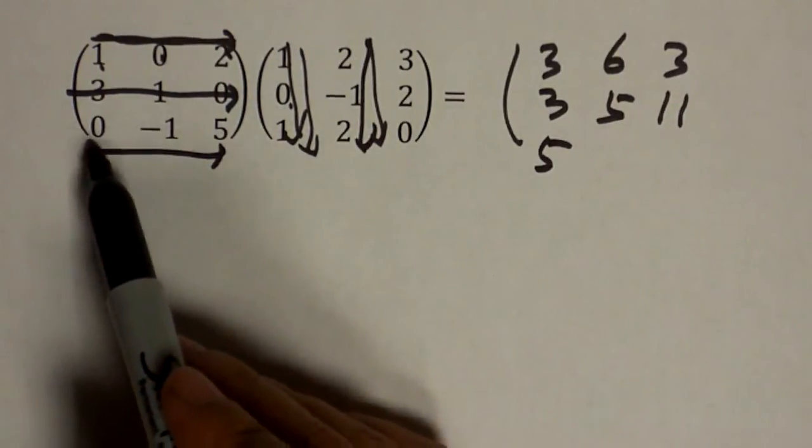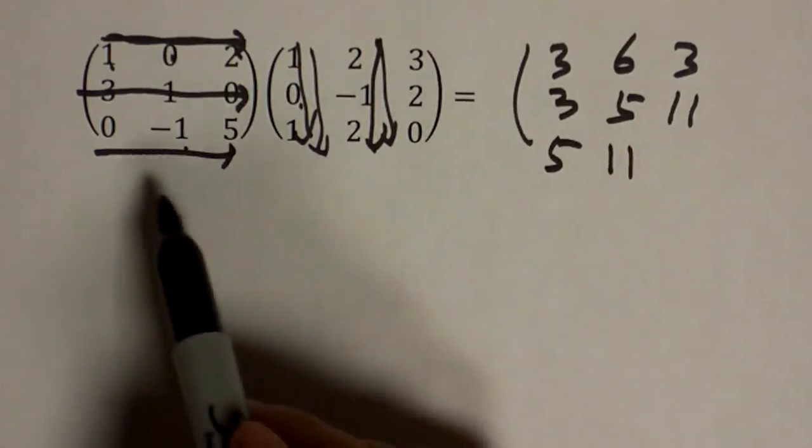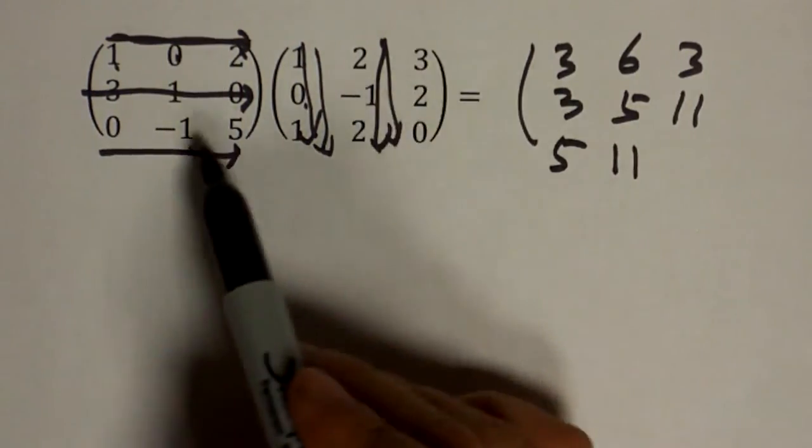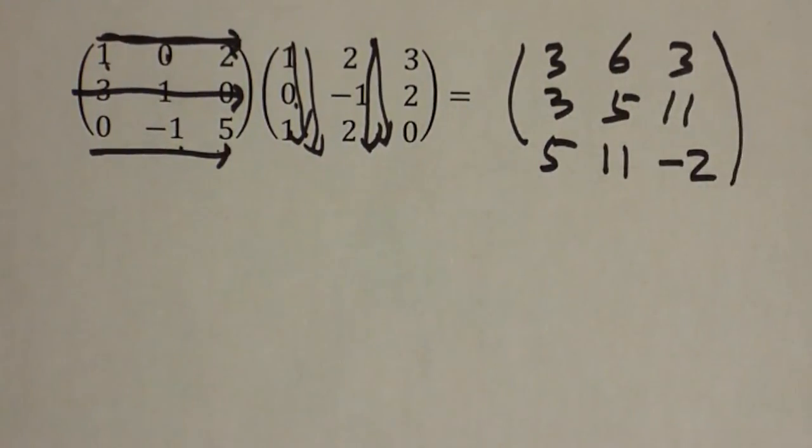0, 2, negative 1, negative 1, 5 times 2, that's 11. Finally, 0, 3, negative 1, 2, 5 and 0, that's negative 2. And that's how you multiply two three by three matrices.